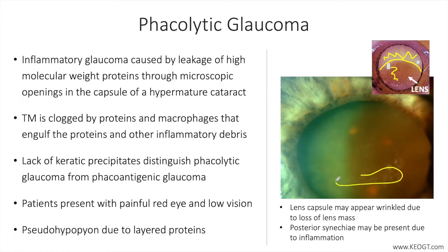Gonioscopy, if corneal edema allows, should be performed to rule out the presence of neovascularization and fibrovascular membranes causing neovascular glaucoma. Dilated fundus examination should be completed if visualization is possible to identify posterior segment pathologies that can cause inflammation and neovascularization. Ultrasound testing should be used to examine the eye if visualization is not possible on dilated fundus exam. All of these steps are taken to rule out disease processes that might mimic or potentially coexist with phacolytic glaucoma.